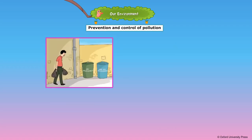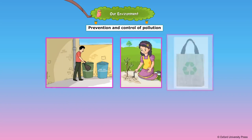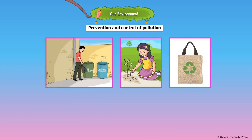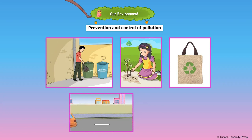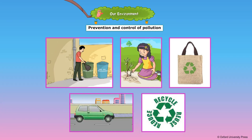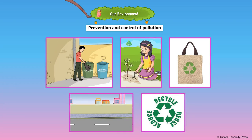We should throw garbage only in covered dustbins. We need to plant more trees. We can use reusable bags instead of plastic bags for shopping. We should avoid unnecessary honking while driving on the road. We should always reduce, reuse and recycle.